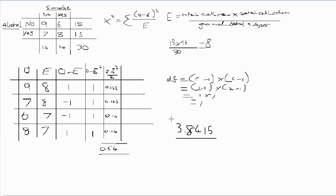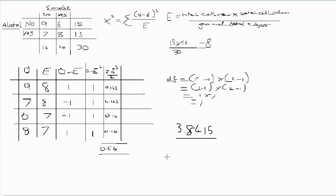Comparing our calculated chi-square value of 0.54 to the critical value of 3.8415, we can see that our value is quite a lot smaller than the critical value. Our finding does not exceed the threshold for significance, making the result not statistically significant. We can conclude there is no statistically significant association between drinking alcohol and smoking cigarettes. That's it for manually calculating a chi-square test!